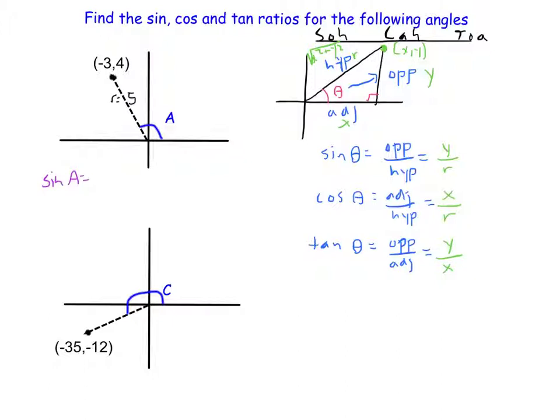So sine is opposite over hypotenuse, and the opposite, remember, is this vertical one, so this is going to be Y over R, and my Y value here is 4, so my sine is going to be 4/5. Now on to cosine.